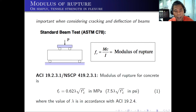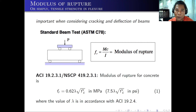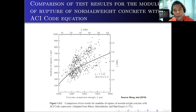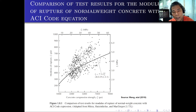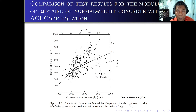You may be thinking: what is this lambda (λ)? Lambda is a modification factor for lightweight aggregate. So if you are using lightweight aggregate, you multiply by the corresponding value of lambda. Normally for normal weight concrete, lambda is just 1.0, so it's fine to use 0.62 times the square root of FC prime. Here is the comparison of test results for the modulus of rupture of normal weight concrete with the ACI code equation. There is really variation in the results, so we just take the best fit for the modulus of rupture, which is around 7.5 times the square root of FC prime, or 0.62 times the square root of FC prime in megapascal.